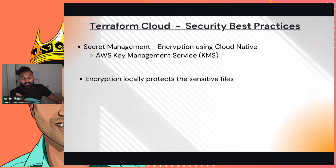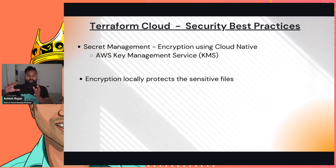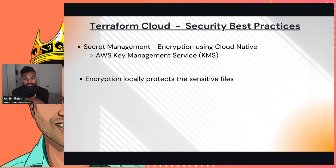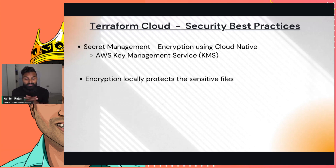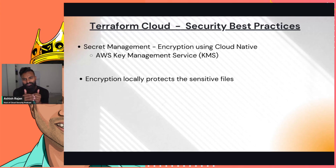The third and final best practice is that instead of just managing things in Terraform Cloud or locally, you can also manage secrets effectively through encryption. Encryption could use cloud-native services like AWS Key Management Service or similar offerings. You encrypt the file locally and use the information in your state file to access the encrypted data. This means you have an encrypted copy locally, and you can use your cloud-native services to hold that information — essentially double encryption.